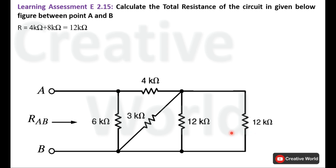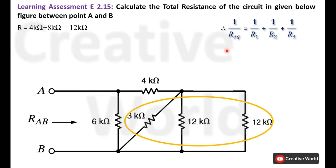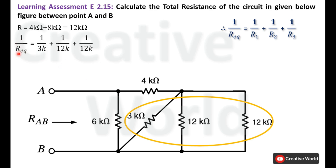Now if we observe, these three resistances are connected in parallel, so we can use the parallel equivalent resistance formula to calculate their combined value. The formula is: 1 divided by R equivalent equals 1 divided by R1 plus 1 divided by R2 plus 1 divided by R3. Placing the values: 1 divided by R equivalent equals 1 divided by 3k, plus 1 divided by 12k, plus 1 divided by 12k.